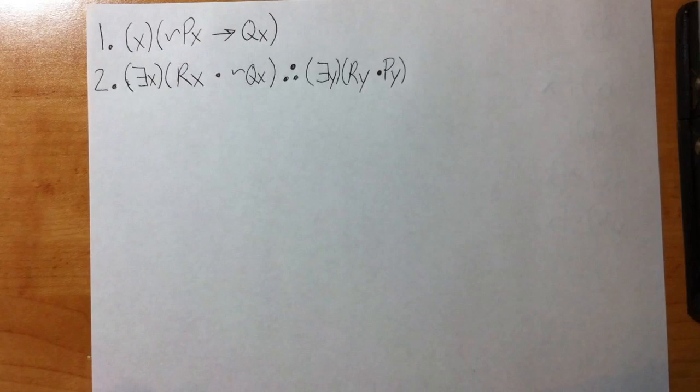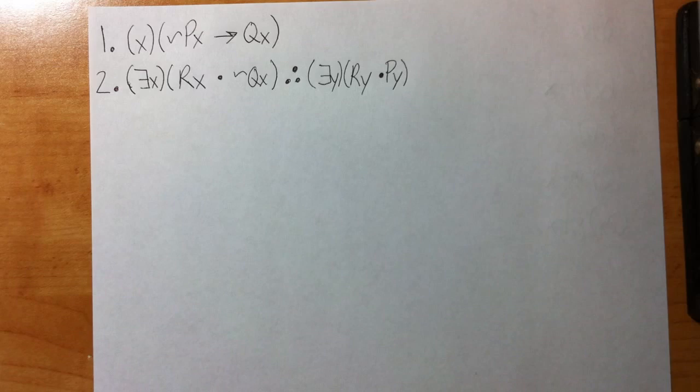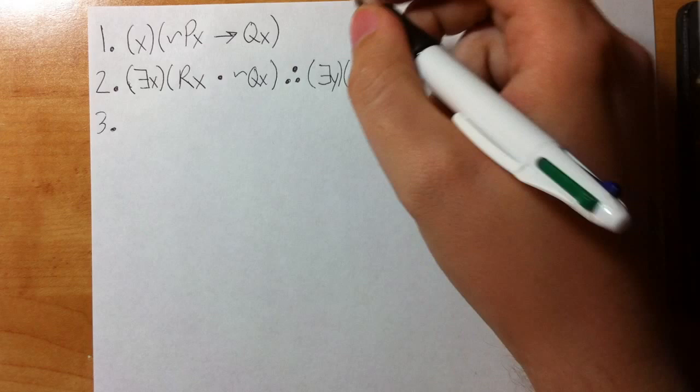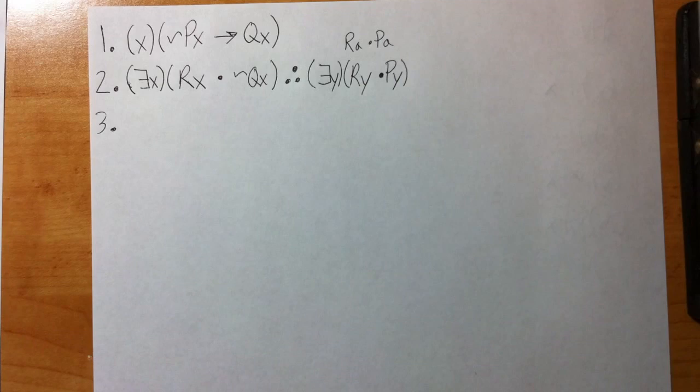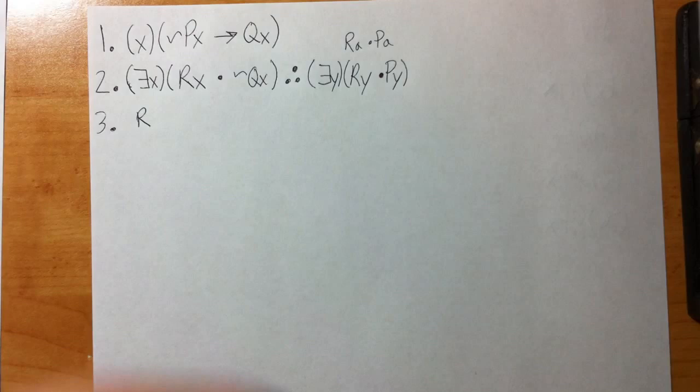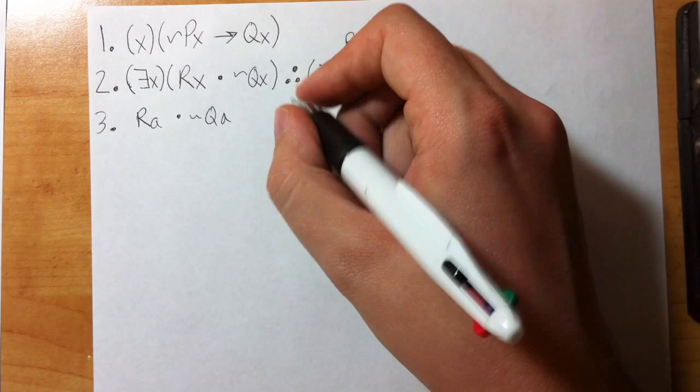So we know these two problems now, so let's do one big problem to kind of sum up all our new rules. So we got this problem here, thinking about some tips. Again, looking at the quantified conclusion, maybe if I can get Ra and Pa, I could be done. So how do we start this problem? Well, I have a universally quantified line and an existentially quantified line. Remember, EI before UI. So I'm going to do EI first. Ra dot Qa, and that's line two EI.